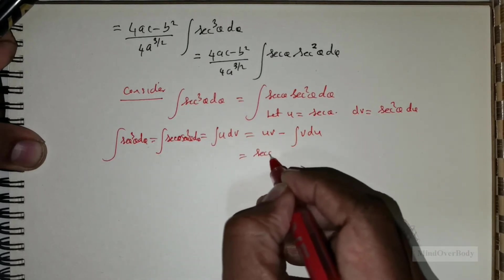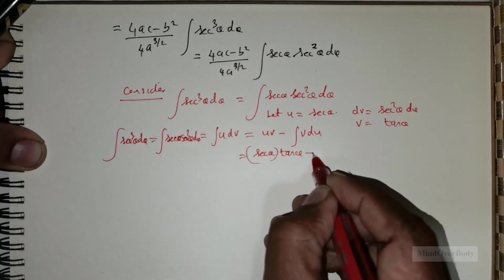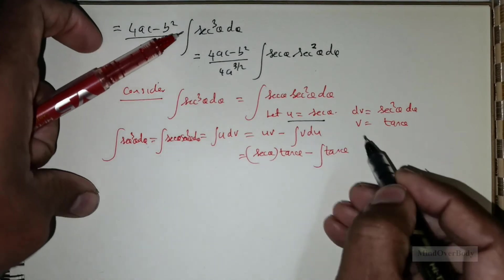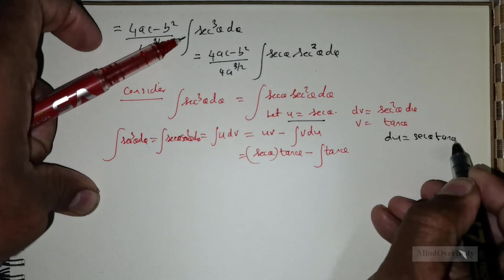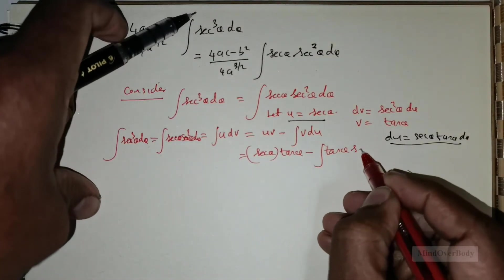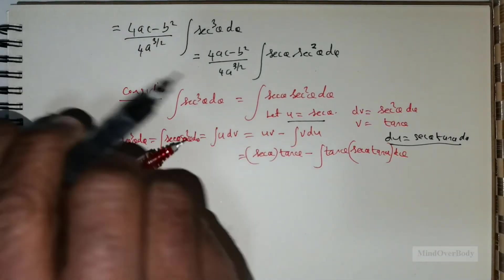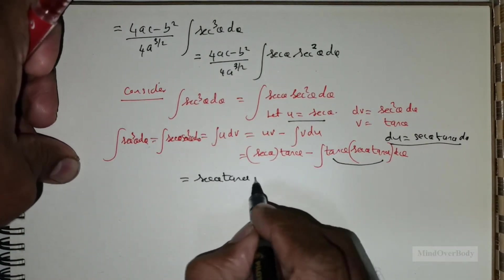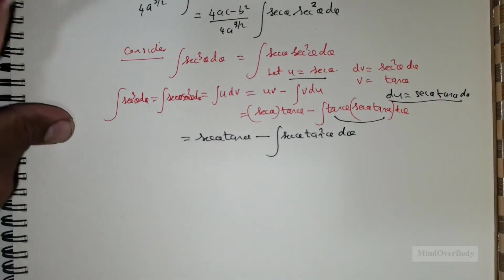Here, u = sec θ, and v = integral of sec²θ = tan θ. So place tan θ. For du, when you differentiate u = sec θ, you get sec θ · tan θ · dθ. So the integral becomes sec θ · tan θ minus the integral of tan θ · sec θ · tan θ · dθ, which is sec θ · tan θ minus the integral of sec θ · tan²θ · dθ.